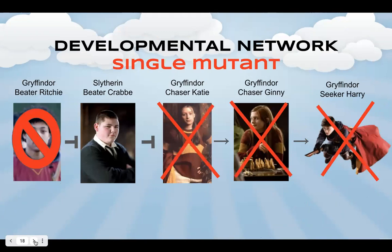But what happens if there's a single mutant in one of these genes, such that Ritchie is not there to hit the bludger at Crab? That means there is nothing inhibiting the expression of the gene Crab, so Crab is free to keep hitting more bludgers at Katie — or in other words, repress gene Katie's expression — preventing Katie from activating the expression of gene Ginny, which prevents the activation of gene Harry's expression too. And Gryffindor loses because the snitch was not caught in time.